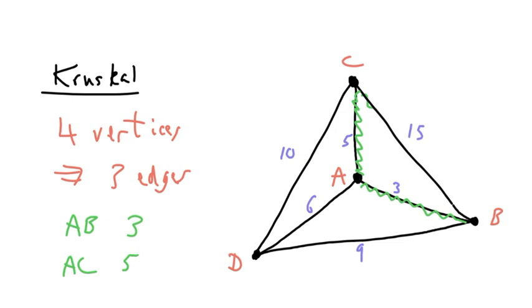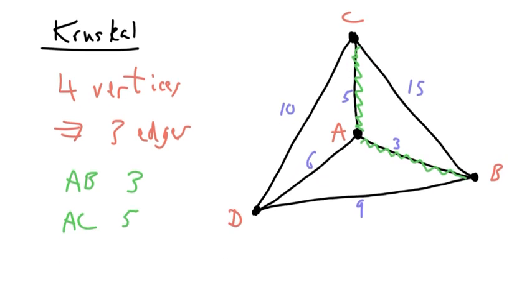So for example, you could not choose BC next because ABC forms a circuit, or cycle rather. And then the next weight is AD.